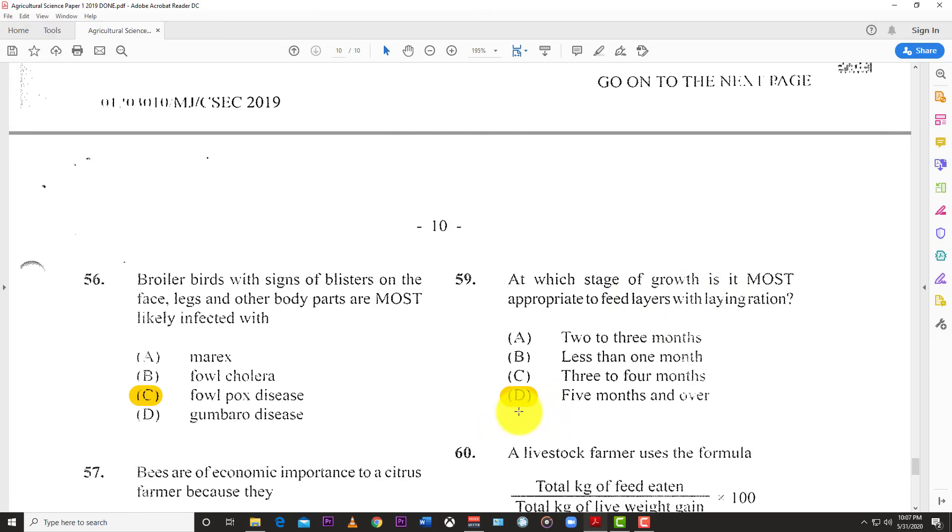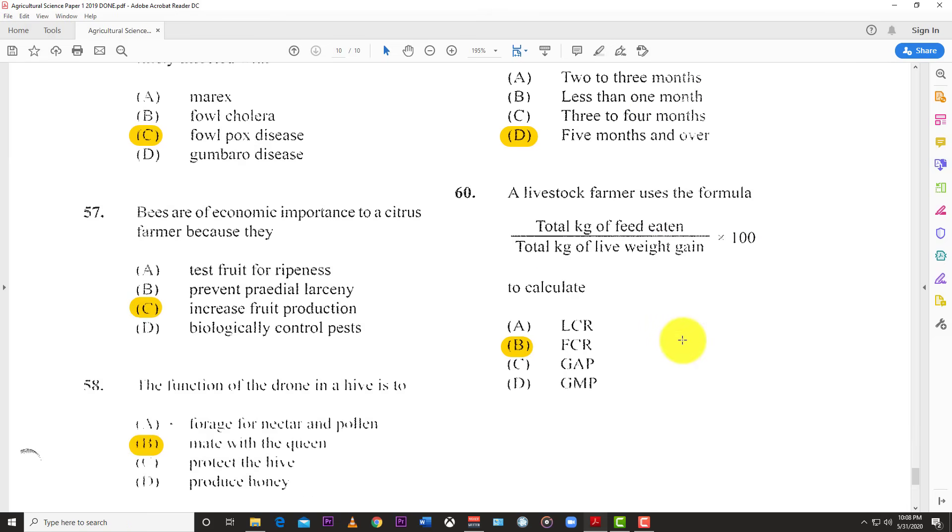Number 59: At which stage of growth is it most appropriate to feed layers with layer ration? The answer is five months and over - from five months until the end of productive life you feed them layer ration. Last question: A livestock farmer uses the formula total kg of feed eaten over total kg of live weight gain times 100. The answer is to calculate the feed conversion ratio or FCR. GAP means Good Agricultural Practices, GMP means Good Manufacturing Practices.